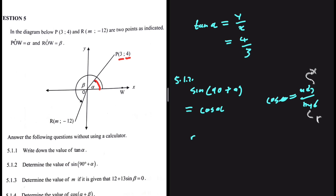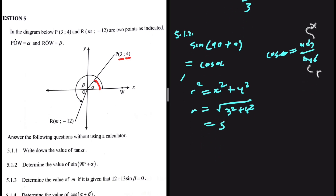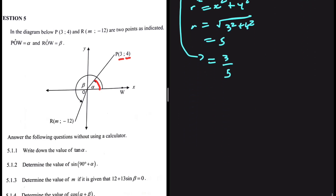We can say that r squared equals x squared plus y squared. So r equals the square root of 3 squared plus 4 squared, giving r equals 5. Now it is easy to see that cos of alpha equals the adjacent, which is 3, divided by the hypotenuse, which is 5.